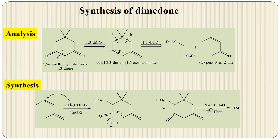Next is synthesis of dimedone. In dimedone there is a 1,3 relationship. When disconnected, one is a donor synthone and the other is a receptor synthone. There is also a 1,5-dicarbonyl relationship (1,2,3,4,5). By disconnecting at path A, we obtain malonate and pent-3-en-2-one. In the presence of base, the malonate attacks on the enone by conjugate addition. Then the active carbon attacks the second carbonyl carbon, the group is removed, and cyclization takes place. Finally, decarboxylation of the ester gives the target molecule, dimedone.